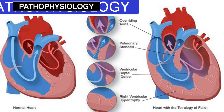The reduced pulmonary flow means less oxygenated blood returns to the left atrium and left ventricle. Meanwhile, more deoxygenated blood from the right ventricle enters the aorta via the VSD. In the aorta, there is a mixture of deoxygenated blood from the RV and oxygenated blood from the LA — producing central cyanosis. The right ventricle must work harder against pulmonary resistance, causing right ventricular hypertrophy.